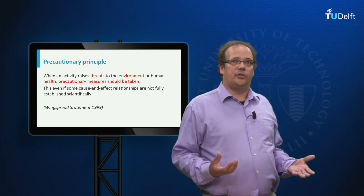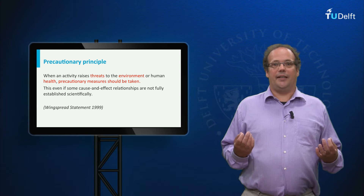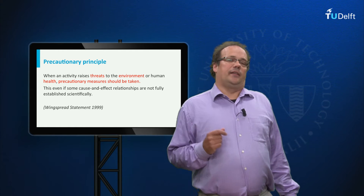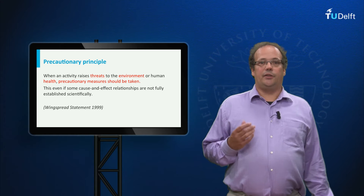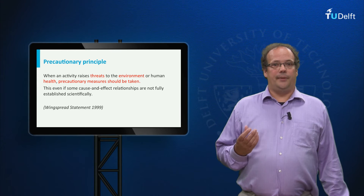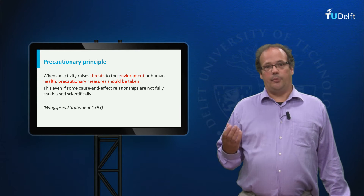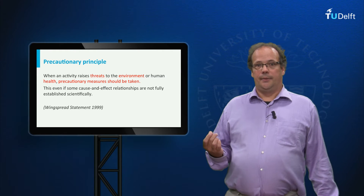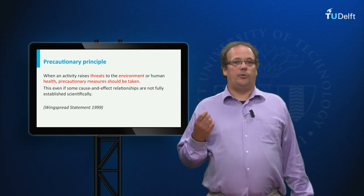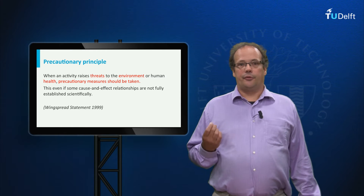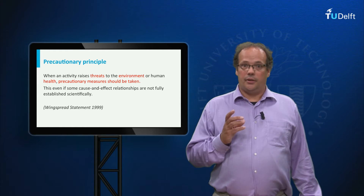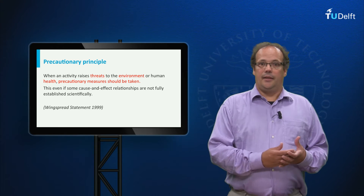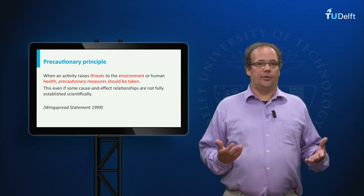An alternative approach that tries to avoid this is the so-called precautionary principle. There are many formulations of it, but here is an often-used one: when an activity raises threats to the environment or to human health, precautionary measures should be taken, even if some cause-and-effect relations are not fully established scientifically. Note that this principle does not require the establishment of probabilities and can therefore deal with what I have called uncertainty.